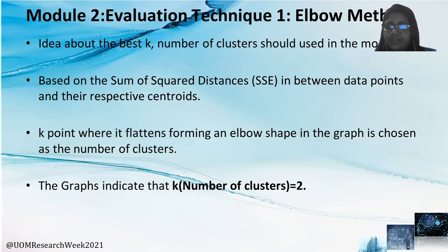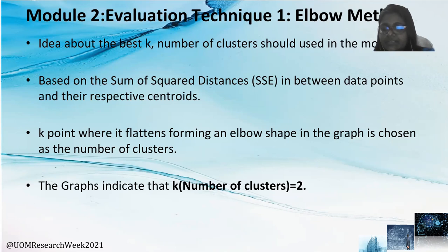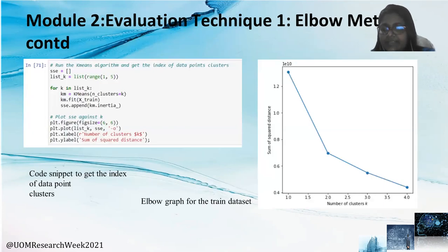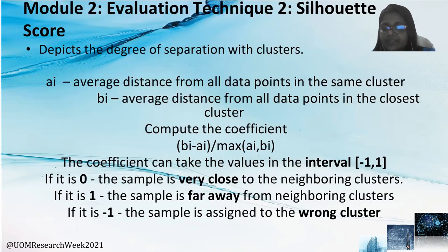Under the evaluation, two techniques — the elbow method and silhouette analysis — were used. The elbow method gives the idea about the number of clusters to be used in the model, based on the sum of square distances between data points and their respective centroids. The point where the graph flattens forming an elbow shape is chosen as the number of clusters. The graph shows the best number of clusters is 2.